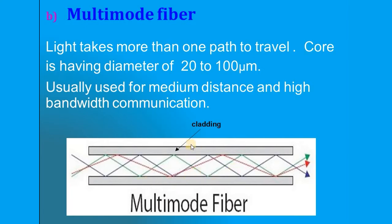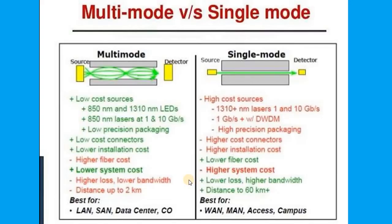Comparing multi-mode and single mode fiber: multi-mode has a large number of ray paths, while single mode has a smaller diameter and one ray path. Low cost sources can be used for multi-mode; high cost sources are required for single mode. Low cost connectors and low installation cost apply to multi-mode, whereas single mode has very high connector and installation cost. Fiber cost is very high for multi-mode but low for single mode.